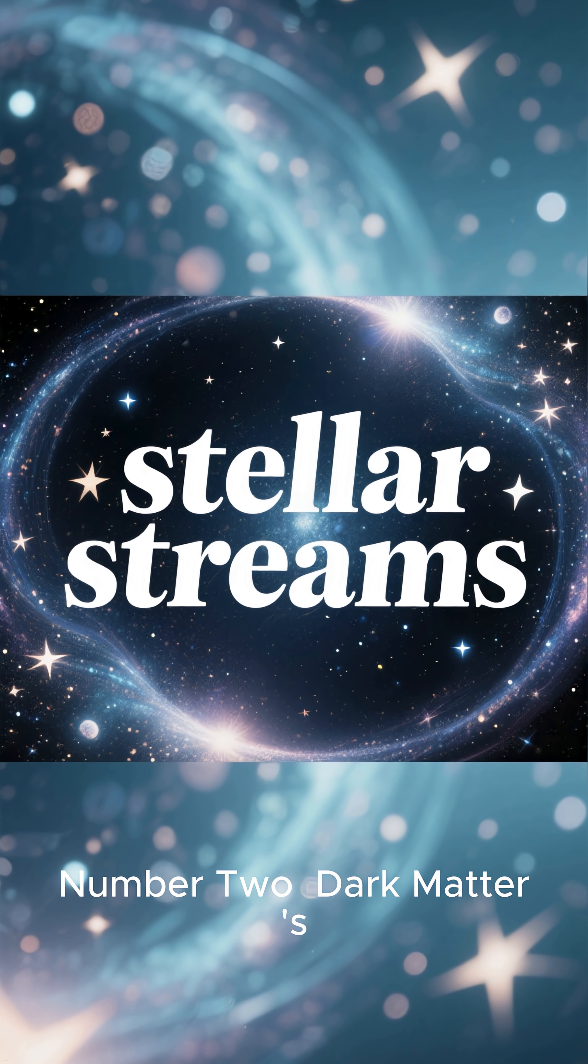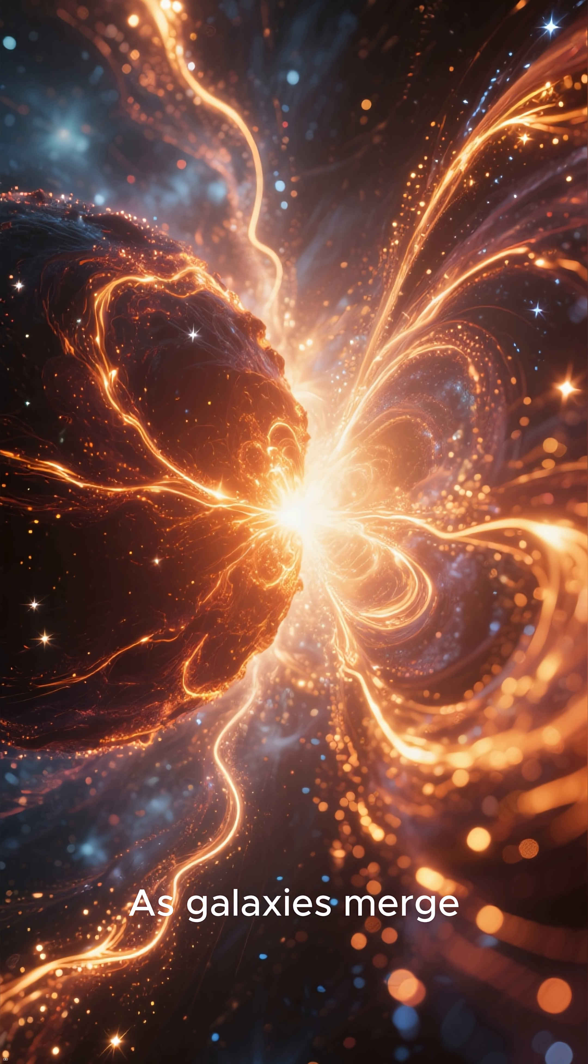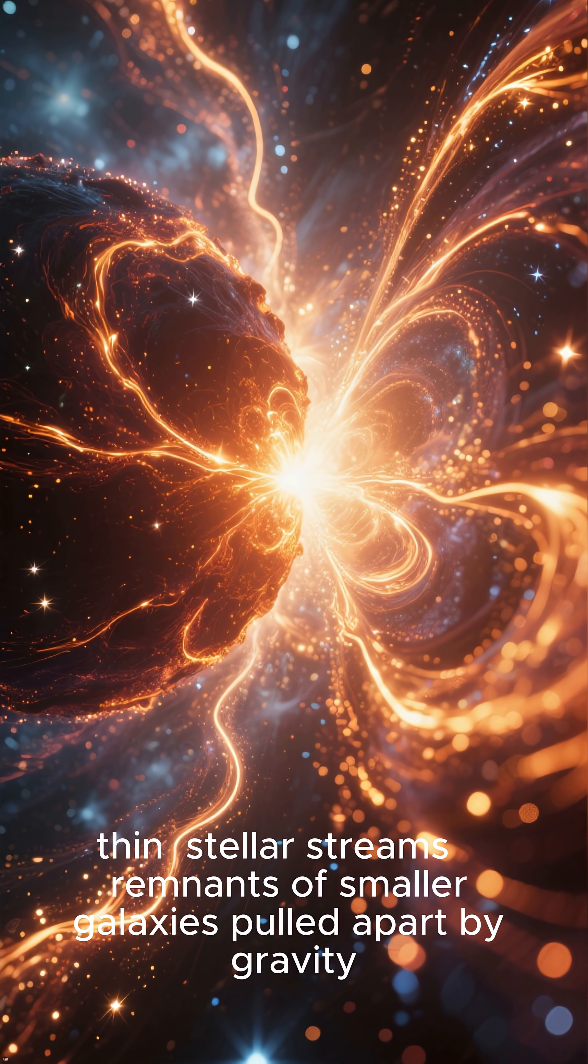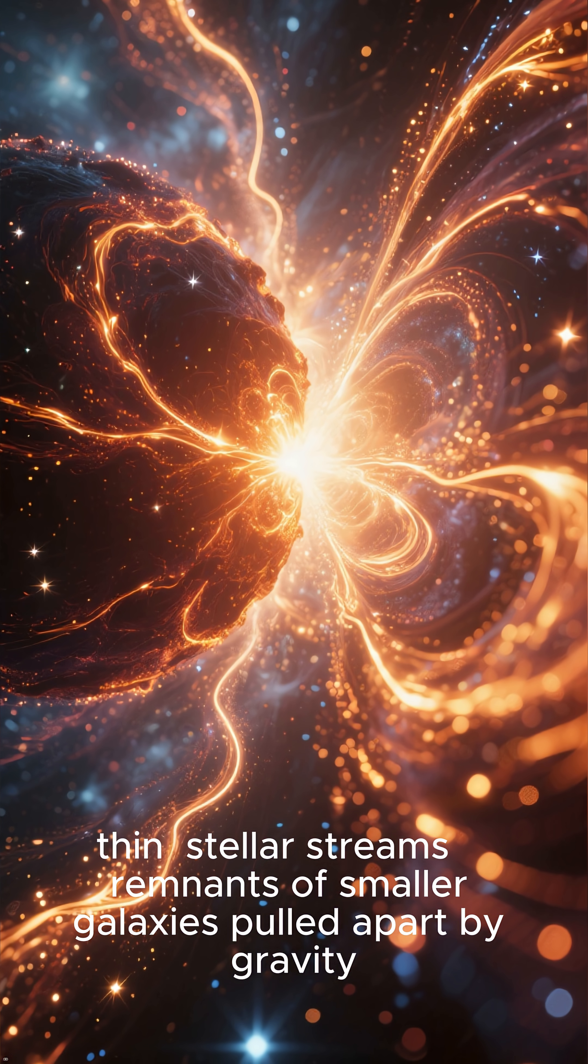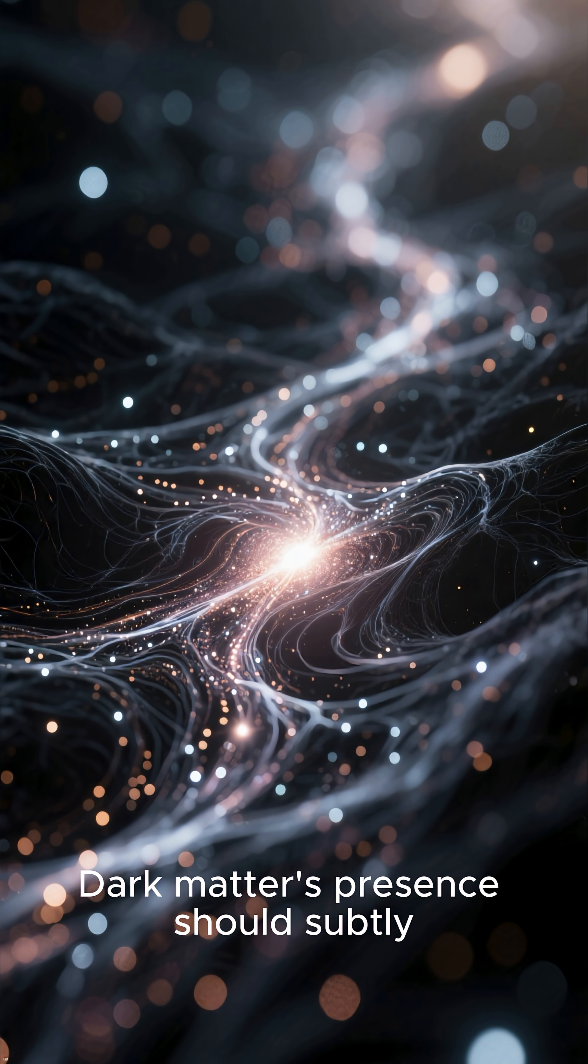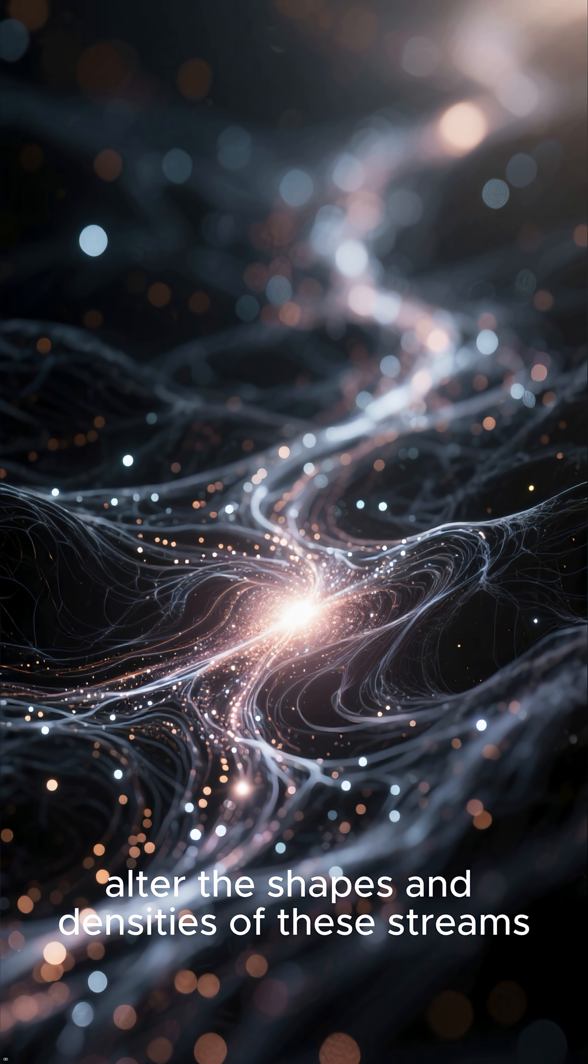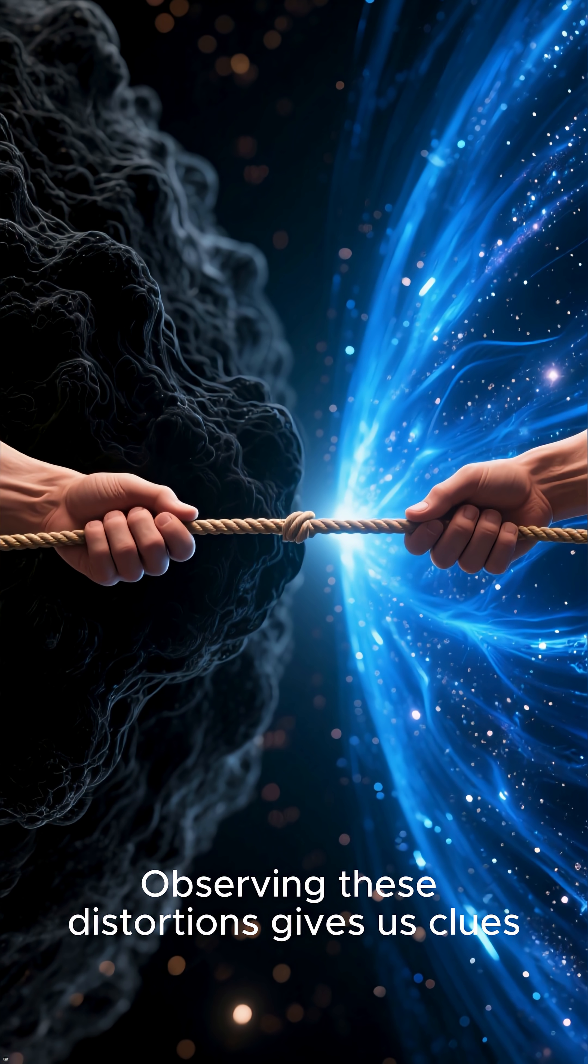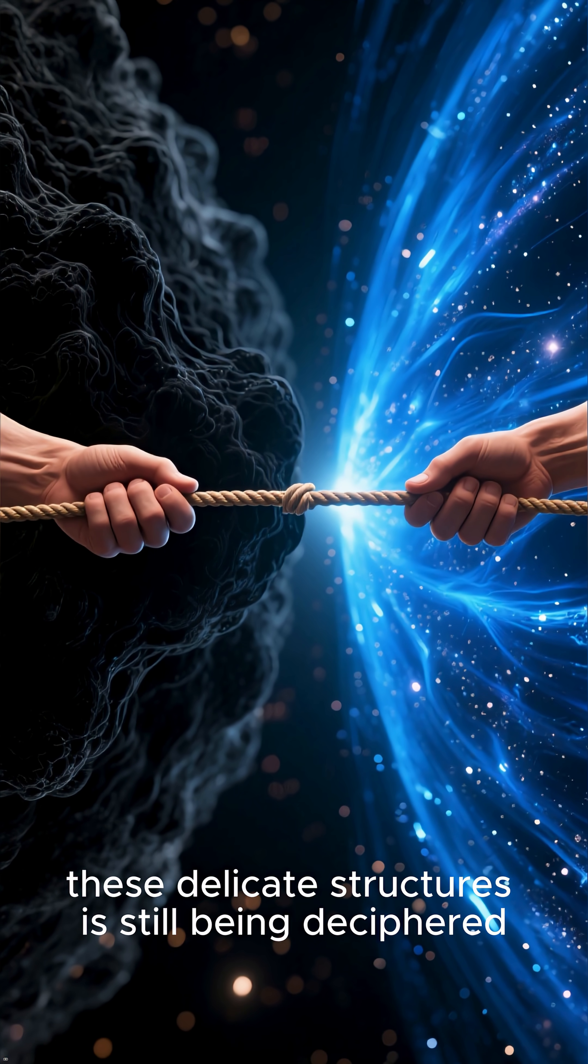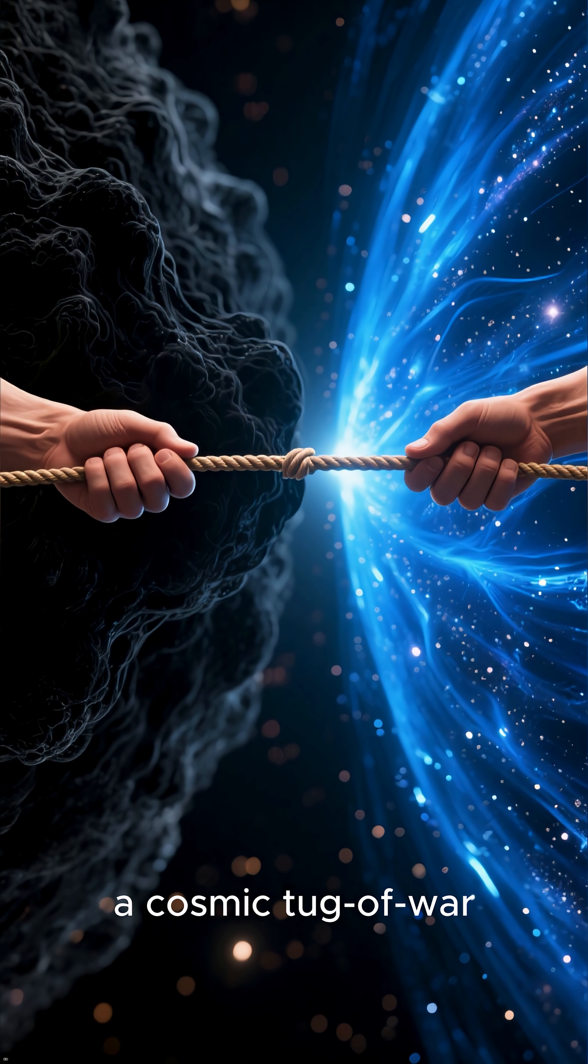Number 2: Dark Matter's Effect on Stellar Streams. As galaxies merge, they leave behind long, thin stellar streams, remnants of smaller galaxies pulled apart by gravity. Dark matter's presence should subtly alter the shapes and densities of these streams. Observing these distortions gives us clues, but the precise way dark matter influences these delicate structures is still being deciphered, a cosmic tug-of-war.